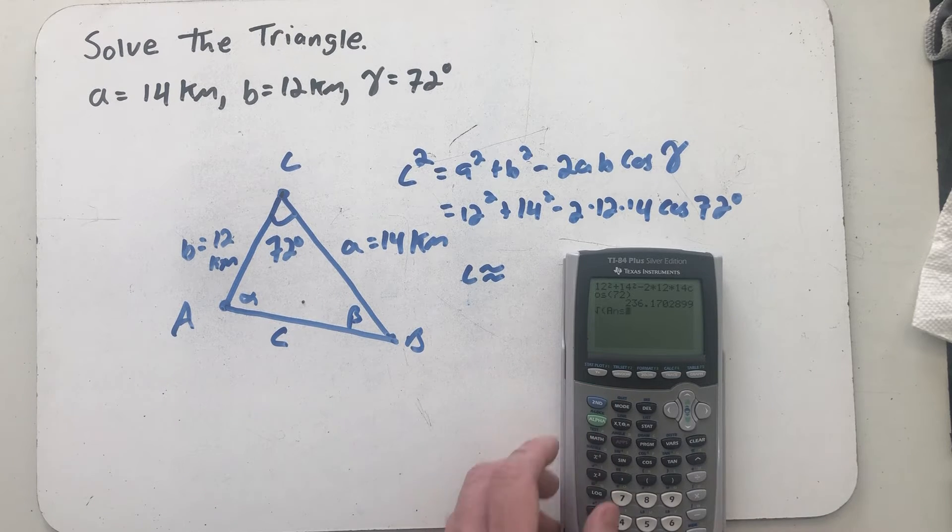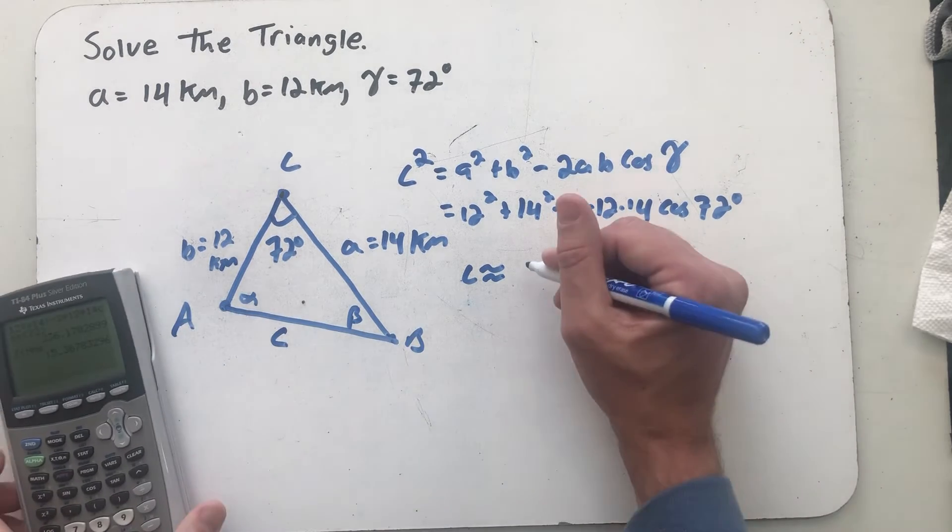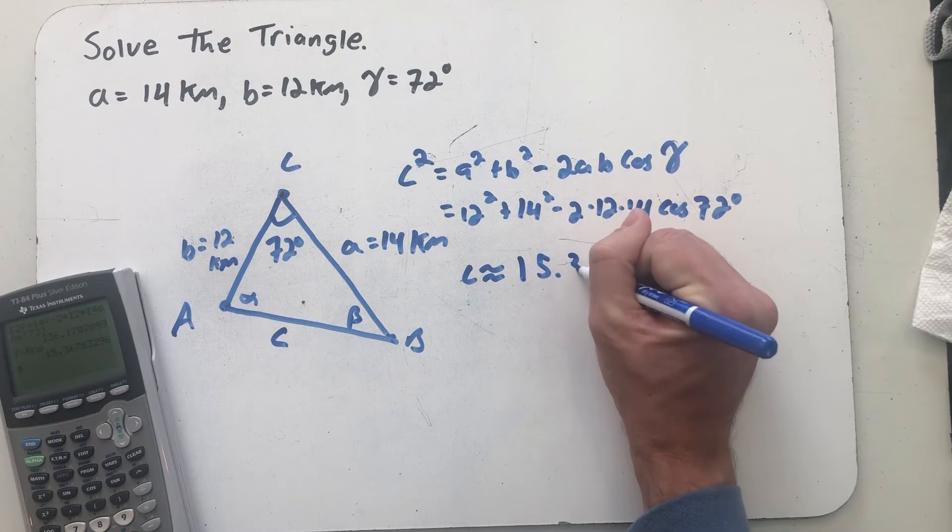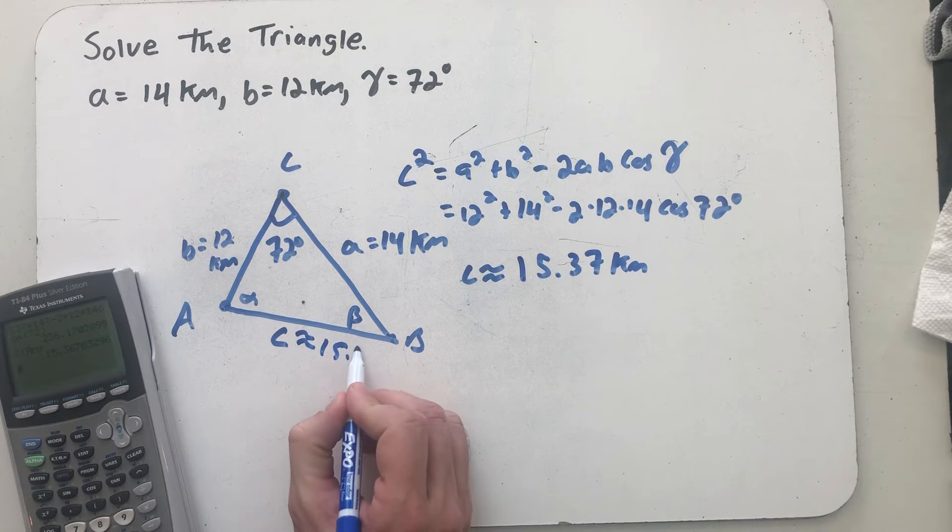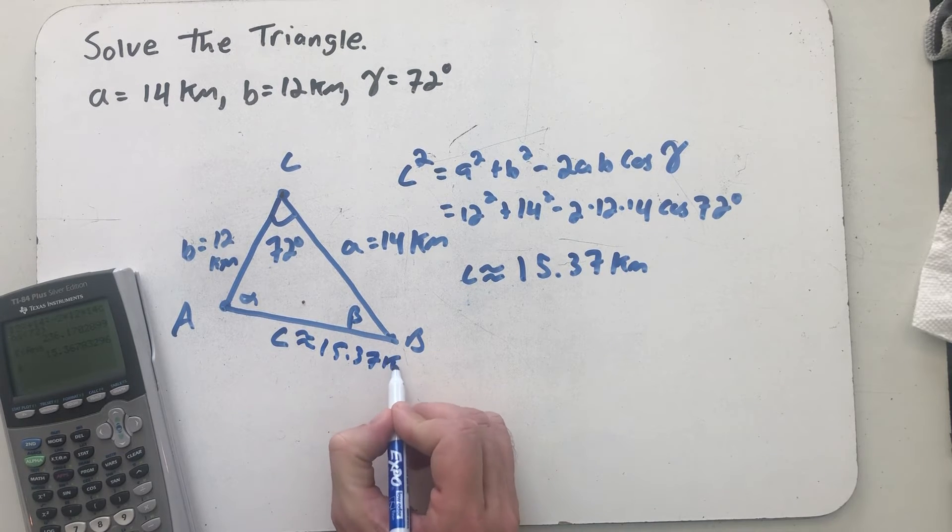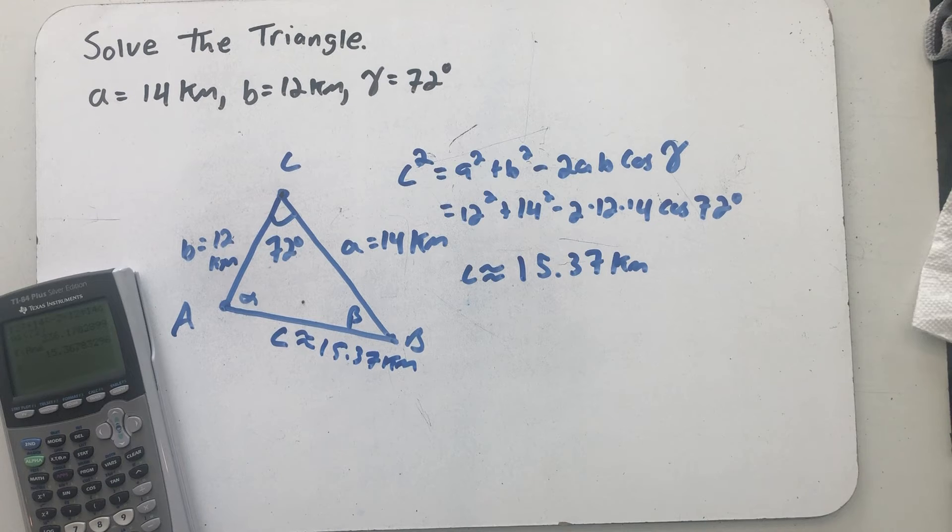There is C squared, and take a square root, and we find out that C is about 15.37 kilometers. Although I follow any rounding instructions that were given, I just feel like rounding to two decimal places for this length, so I'm going to leave it just like that.